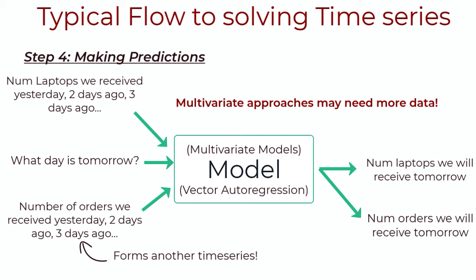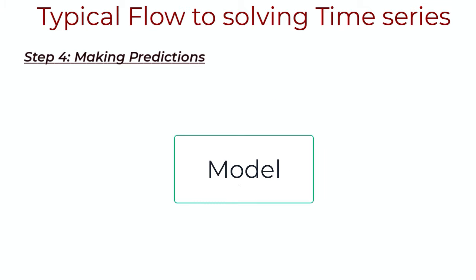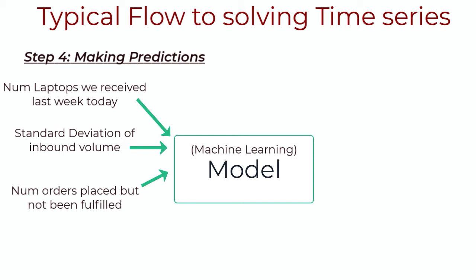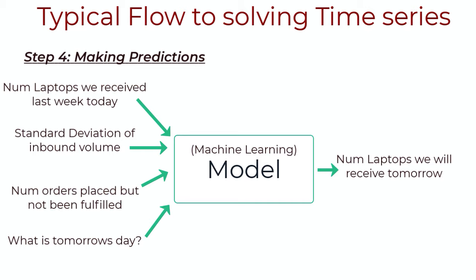We could very well convert this to a traditional machine learning regression problem. In grandma's laptop example, if we're making a prediction today, the features could be: how many laptops did we get this day last week, the standard deviation of inbound volume over the last week, the number of orders placed but not yet fulfilled, day of week predictors to account for weekly seasonality, and anything else you can think of. The label is what we want to predict — in this case, the inbound volume for tomorrow — and we'd frame our training data as a set of X's and Y's.